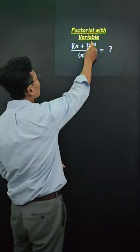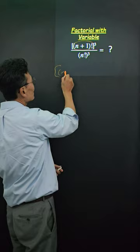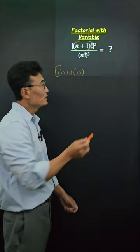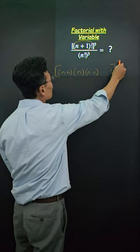The n plus 1 factorial that we have on the top means this: Take the n plus 1 times the number 1 less than n plus 1, which is n, and then 1 less than n will be n minus 1 and continue until it becomes 1.